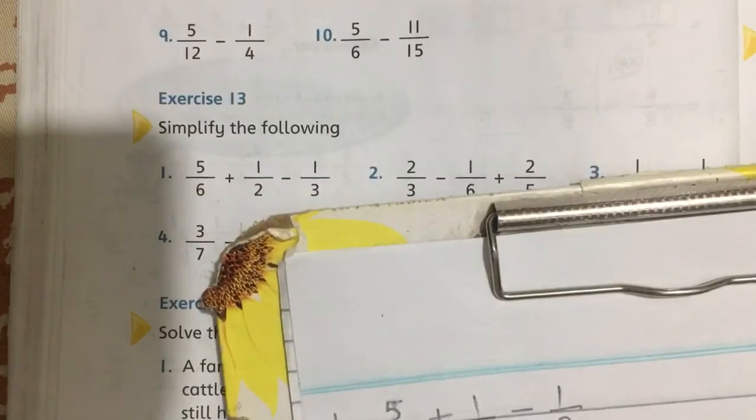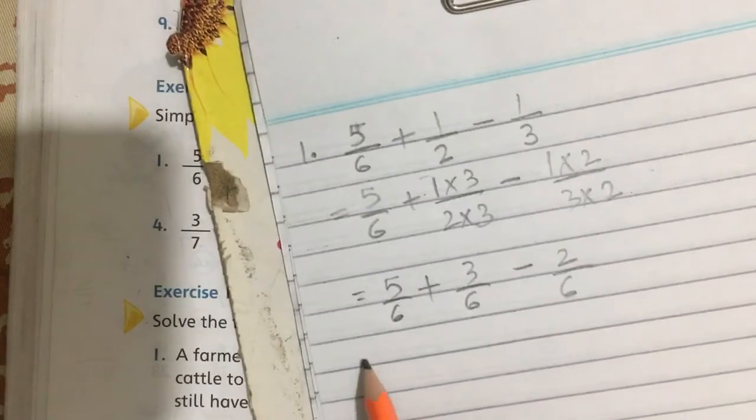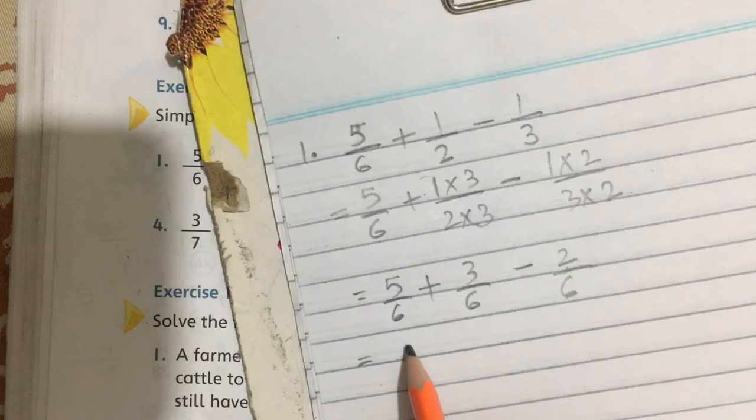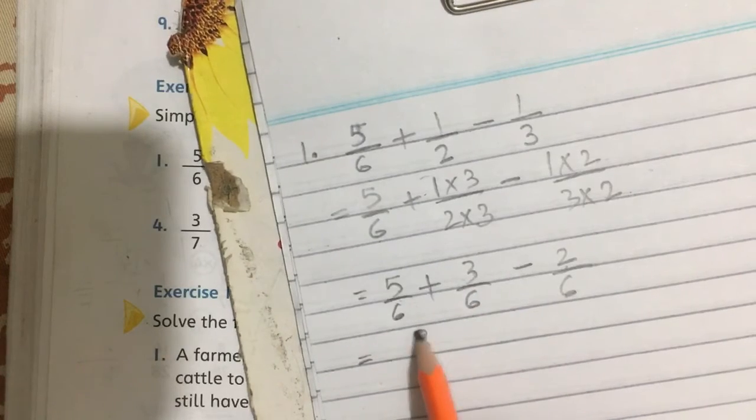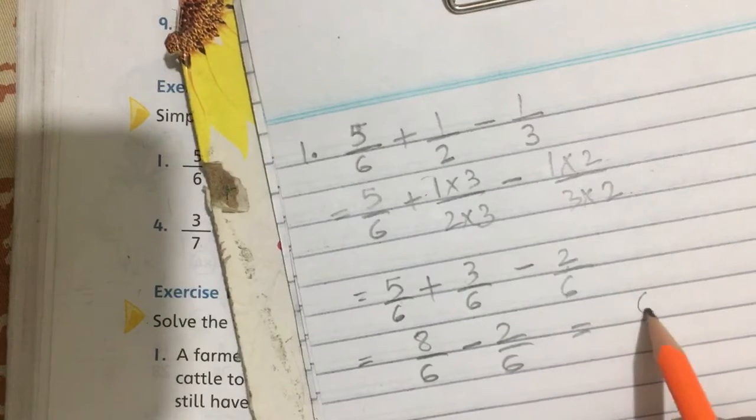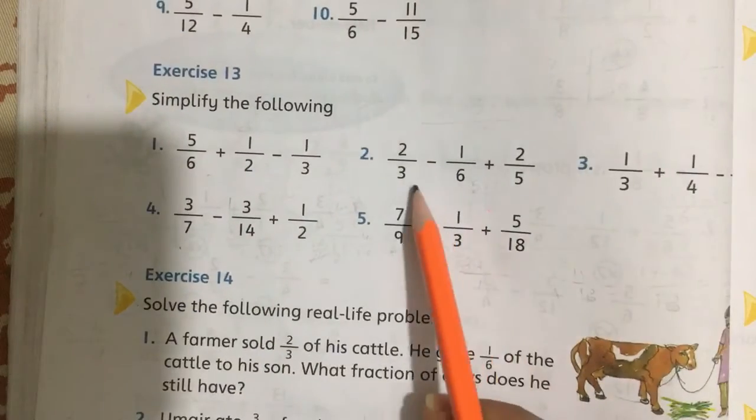Then simplify it: 5 by 6 plus 3 by 6 minus 2 by 6. Now what to do? First add, then subtract the answer. 5 plus 3 is equal to 8 by 6 minus 2 by 6, which is equal to 6 by 6. 6 ones are 6, so the answer is 1.